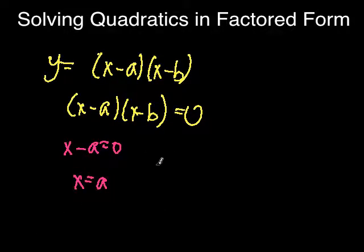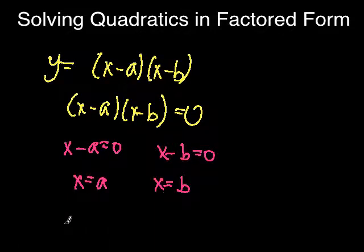In the second situation, if x minus b equals 0, then x equals b. The result is the answer x equals a comma b.